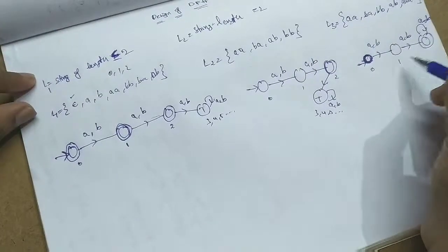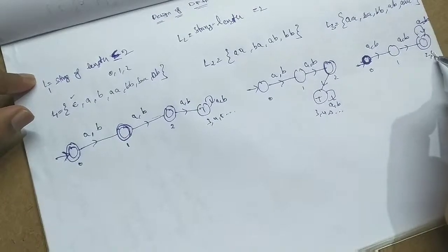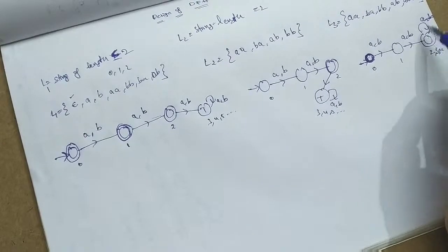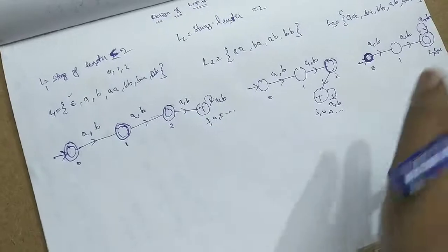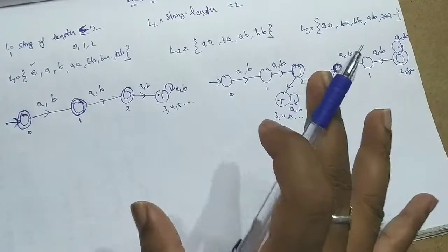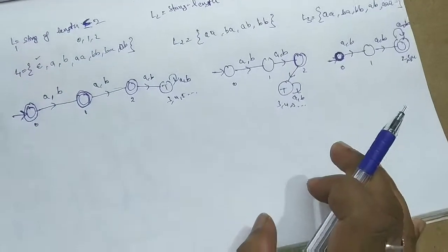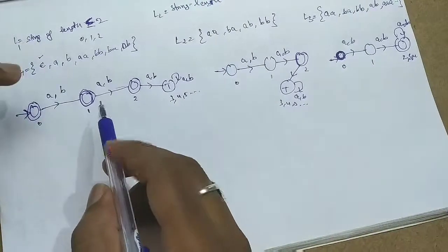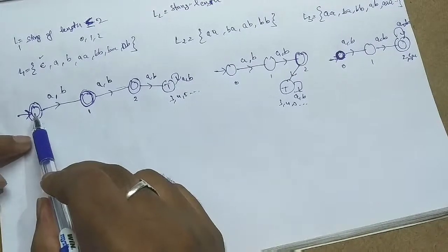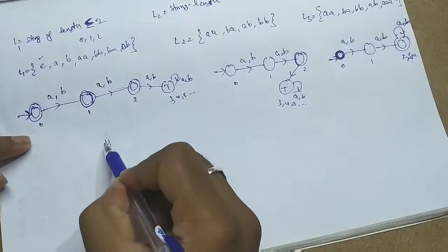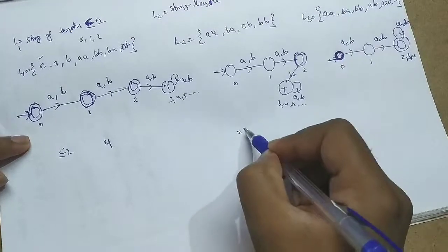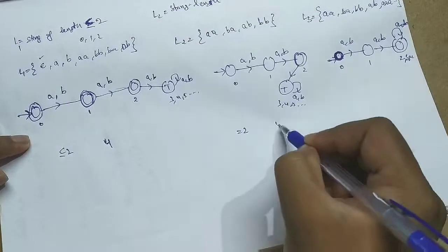Length of the string equal to 0, equal to 1, equal to 2, 3, 4, 5 — I have given a loop, meaning strings of length 2 and beyond are accepted. For less than or equal to 2, you need 4 states. For equal to 2 you also get 4 states. For greater than or equal to 2, you get 3 states.